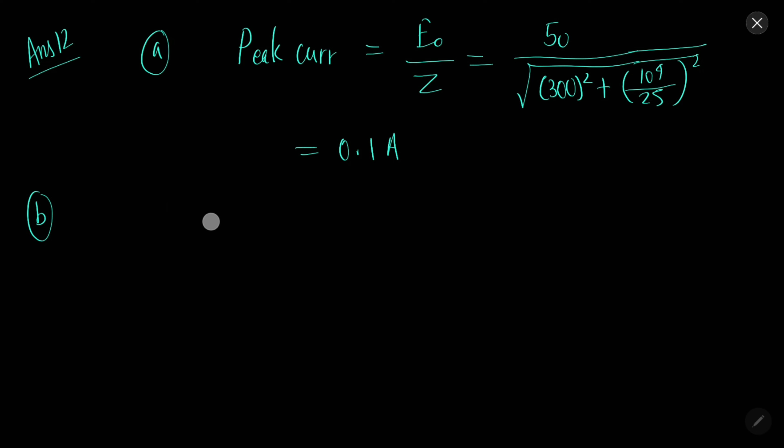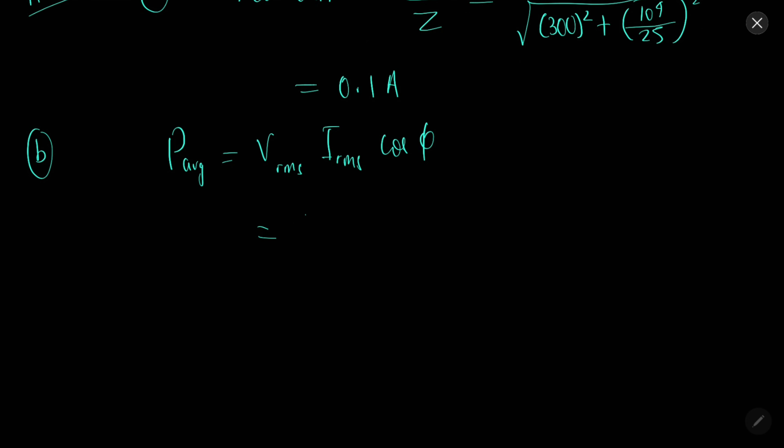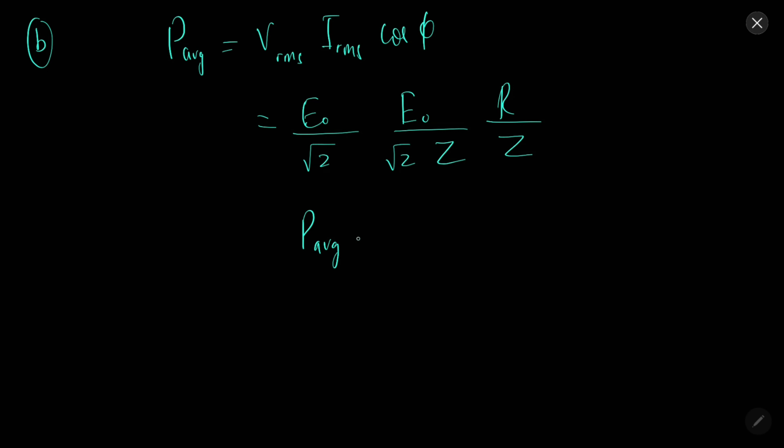Part B: average power dissipated will be V_rms or E_rms into I_rms cos phi. It can be E₀ by root 2 then I₀ by root 2 Z, and cos phi is R by Z. Putting all the values, average power will come 1.5 watt.